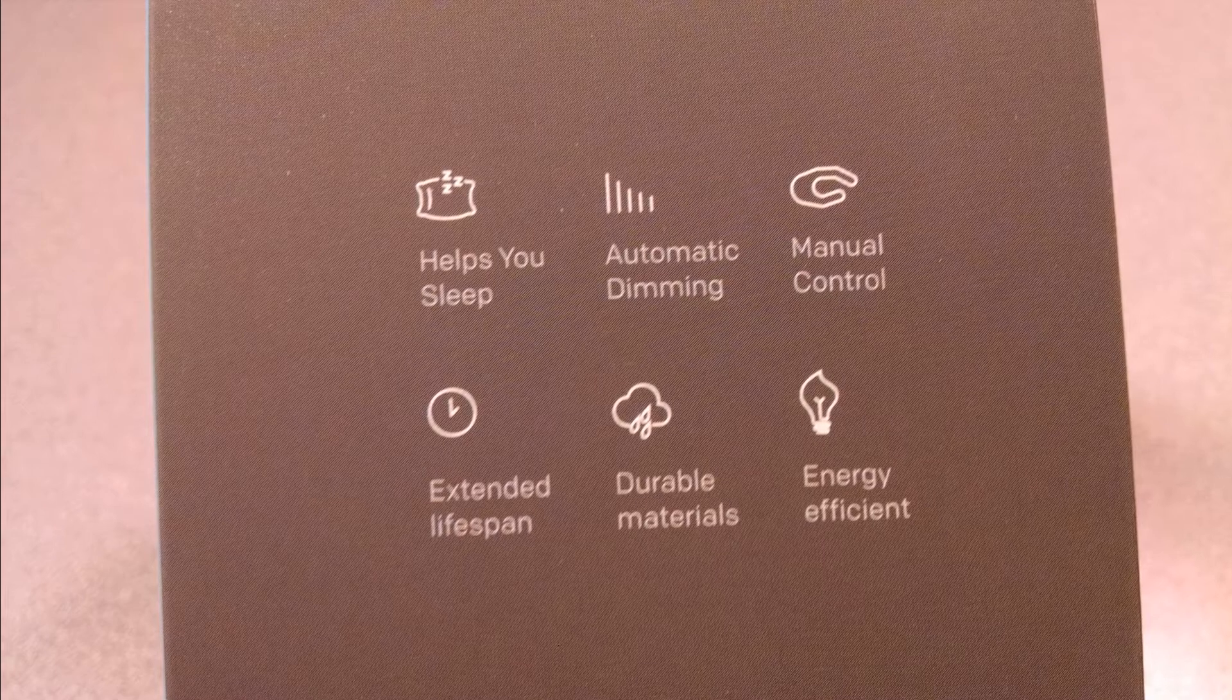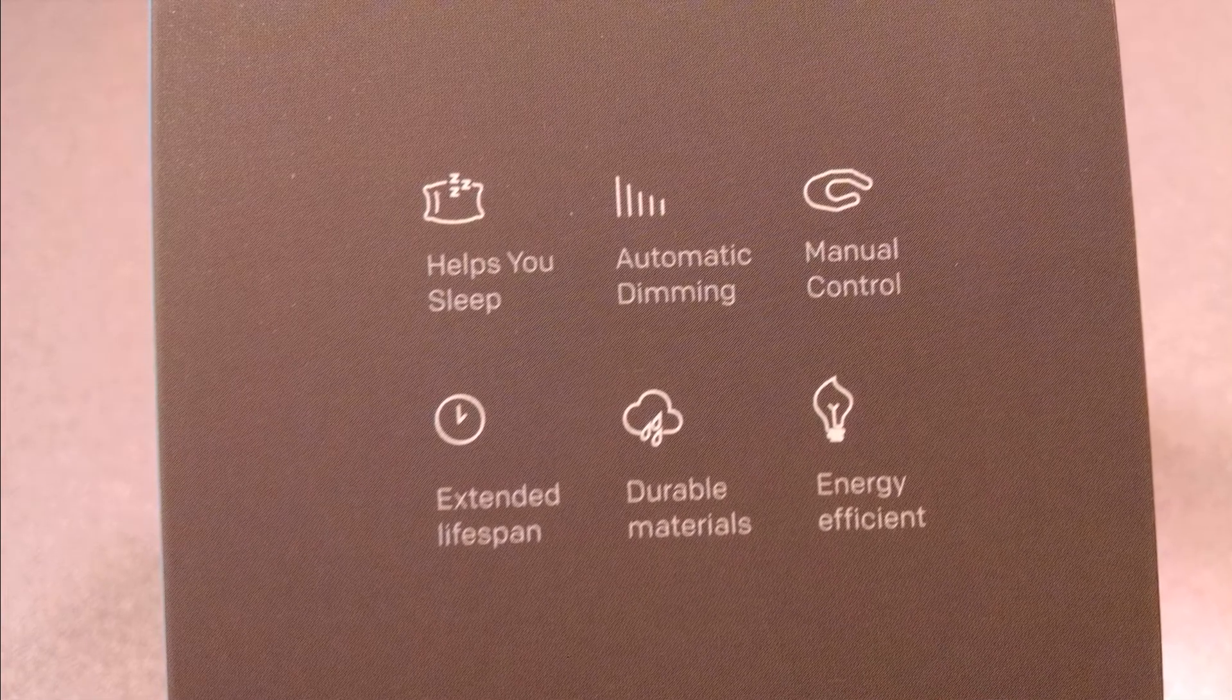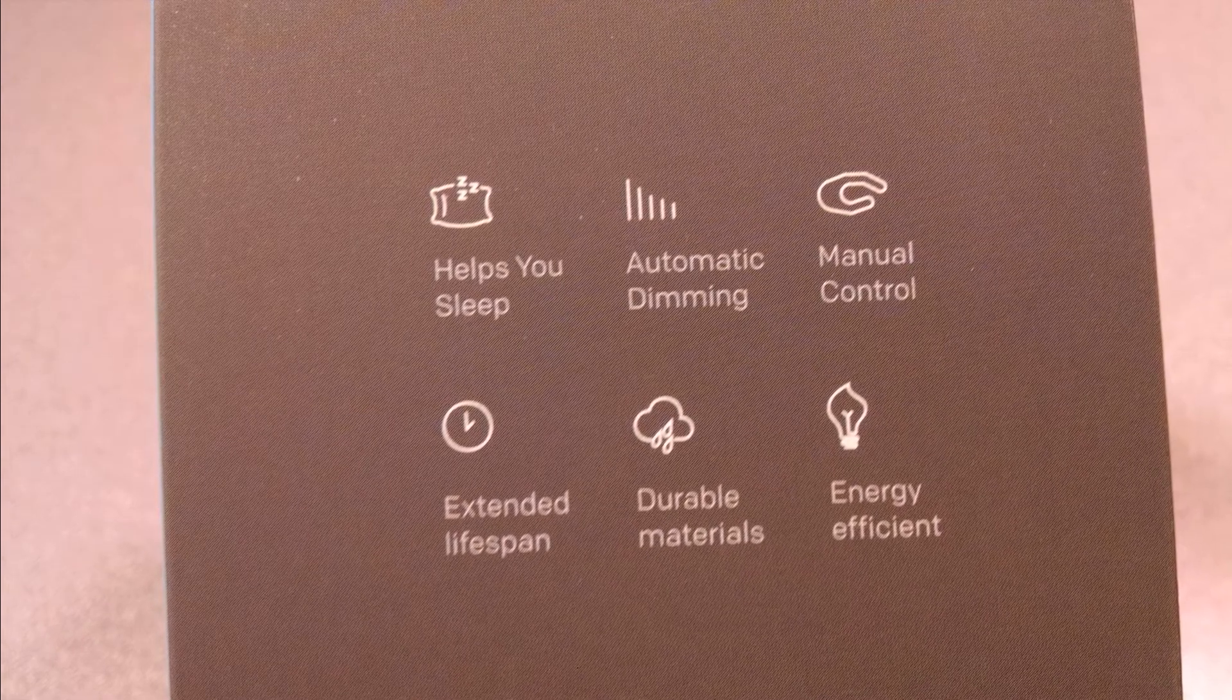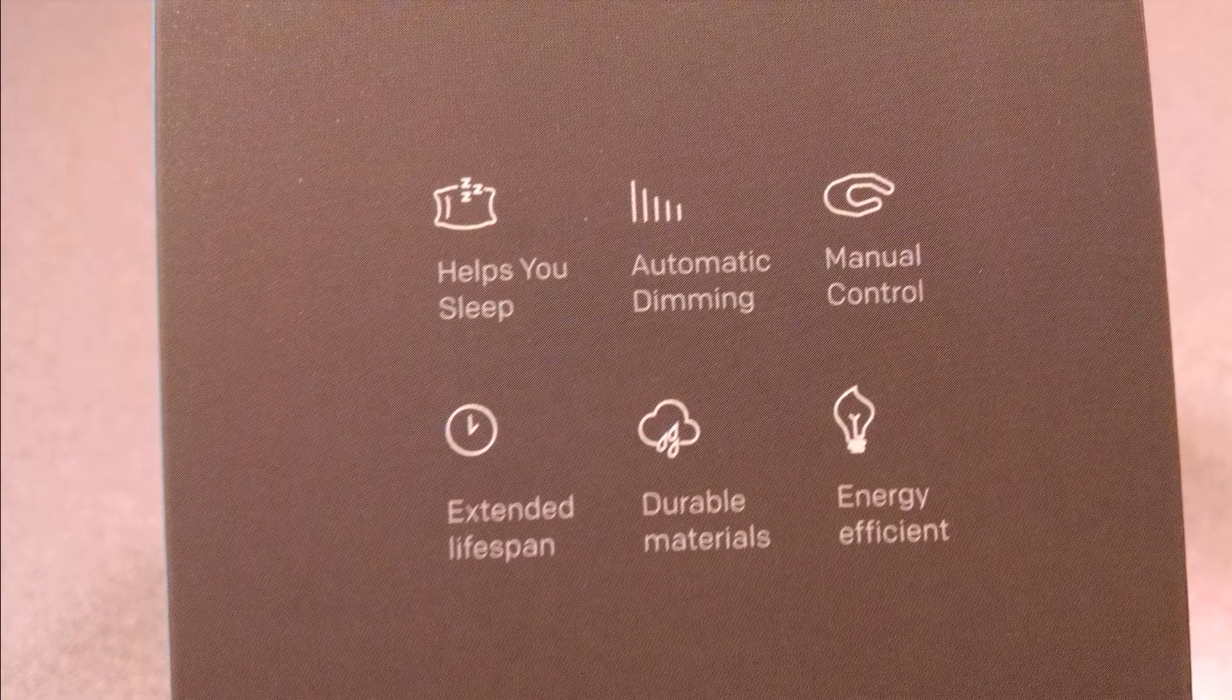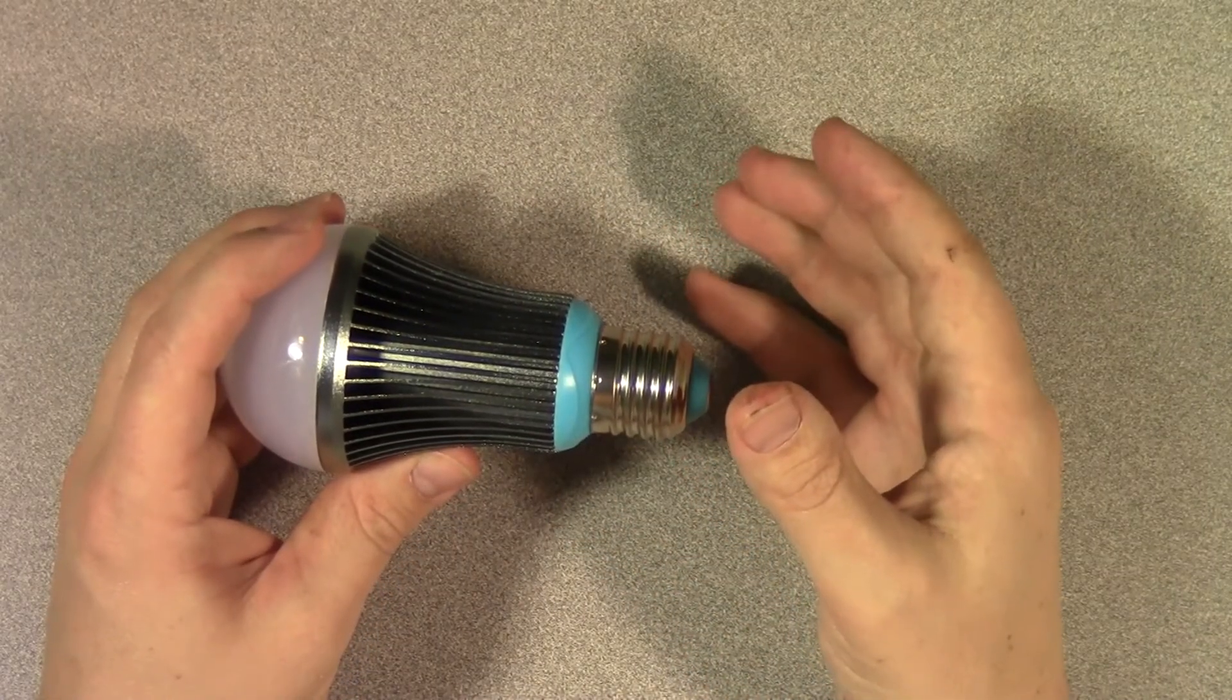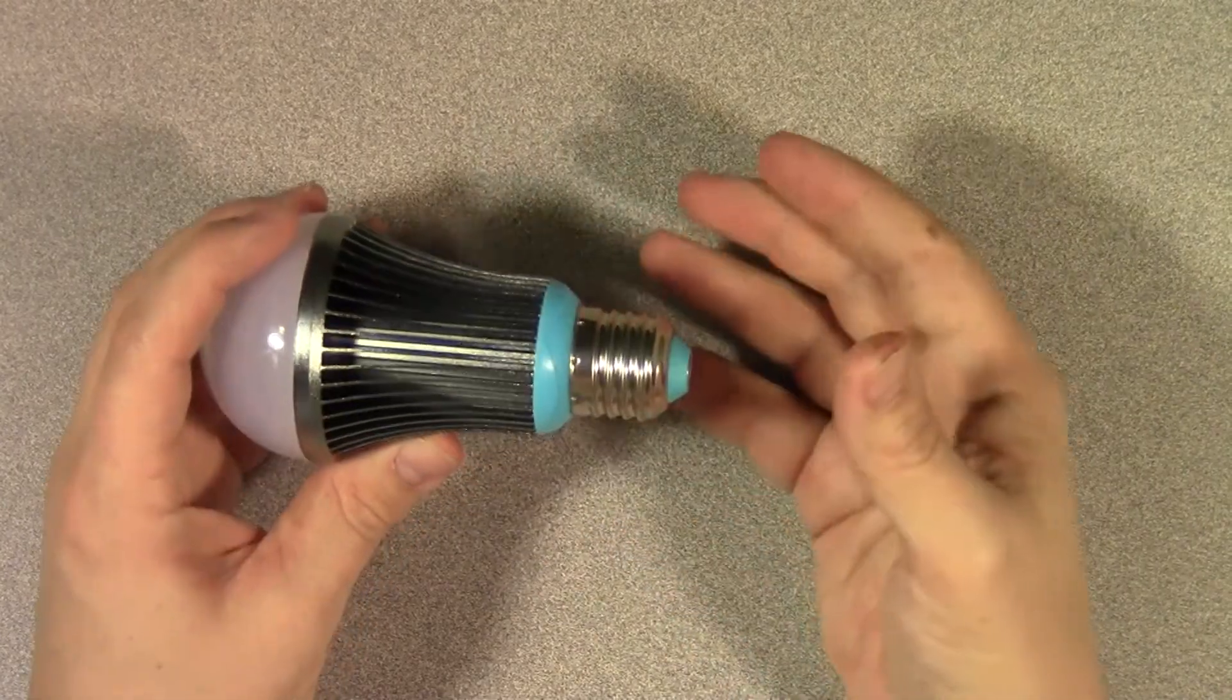In case you're wondering what these two modes are good for, it turns out they're designed to help you sleep. There's a lot of scientific study out there, a lot of theories, but it seems like there's a sleep hormone that is released when you start to have dim light or when the lights go out. And that hormone helps you sleep.